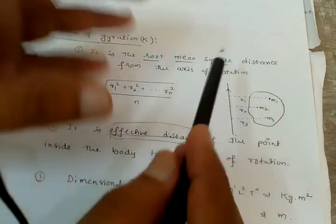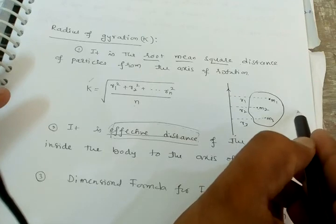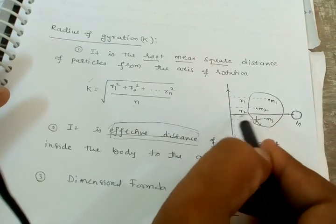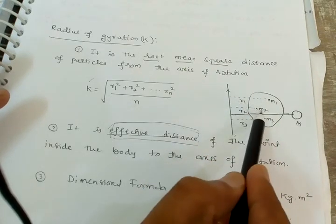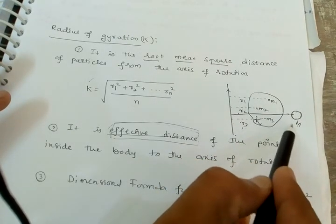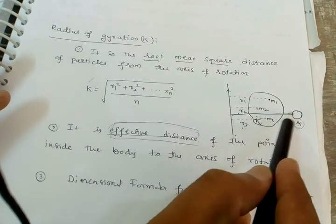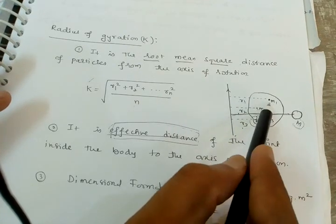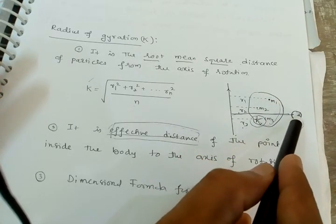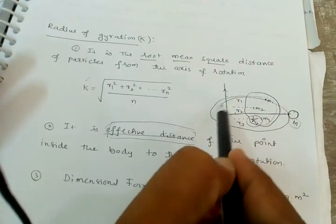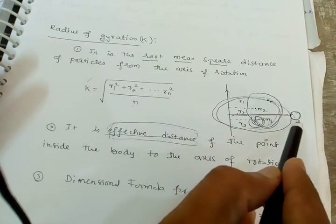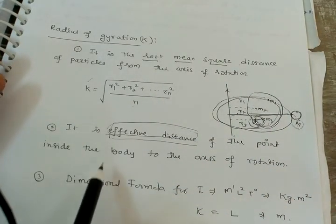If all masses m1, m2, m3 are combined into a single total mass M, then k is the effective distance of that combined mass from the axis of rotation. Individual particles are at distances r1, r2, r3, but if all the particles are merged into one point, the effective distance of that point from the axis of rotation is k. So k is the effective distance when all masses are concentrated at one point.